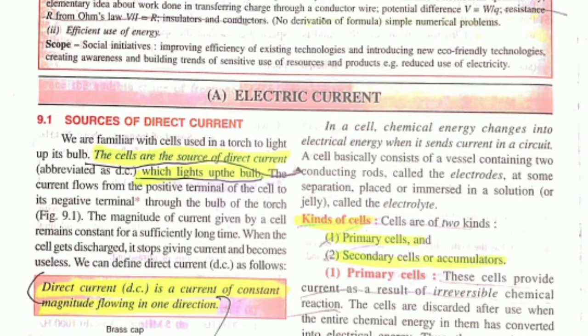First term is direct current. Basically, direct current is a current of constant magnitude flowing in one direction. In direct current there is constant magnitude - magnitude refers to the quantity - so there is the same magnitude, same quantity of current flowing in just one direction. That kind of current is called direct current.